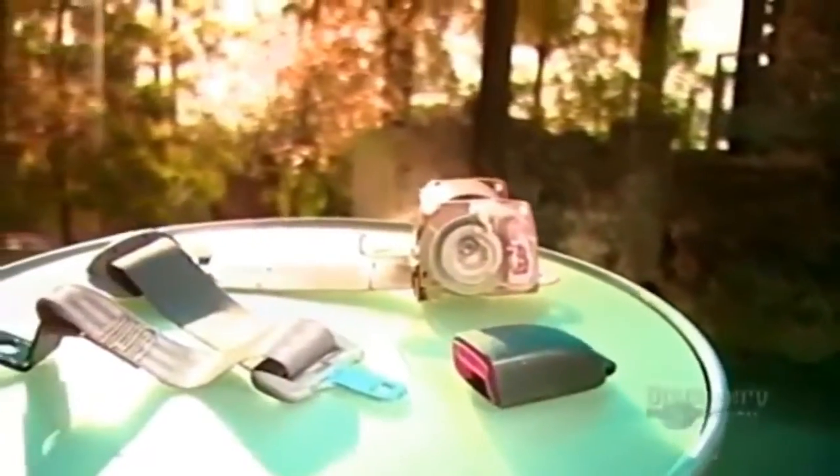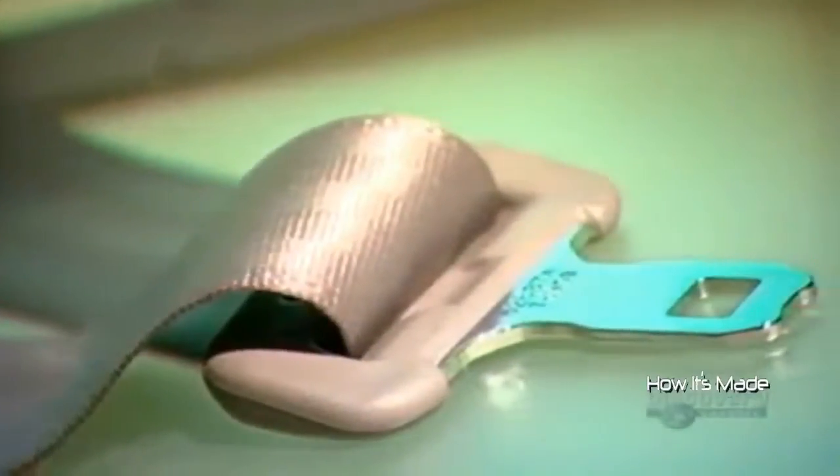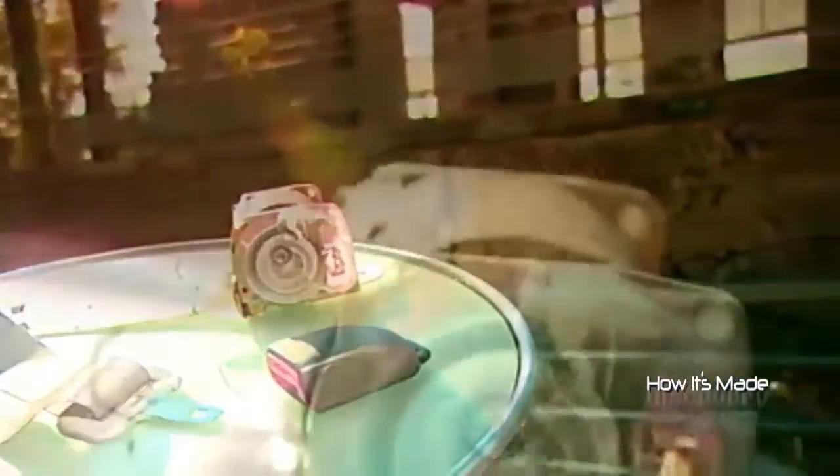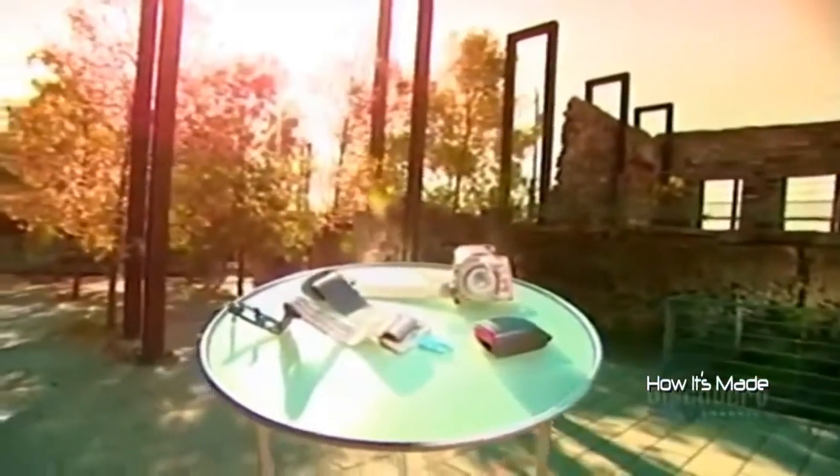Indisputable fact that seatbelts save lives. When a car comes to a sudden stop, the seatbelt prevents you from hurling forward. It spreads the stopping force across the sturdier parts of your body, namely your rib cage and pelvis. This spreading action dilutes the strength of the stopping force, minimizing injury.